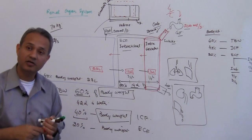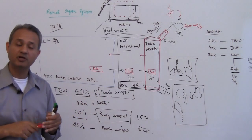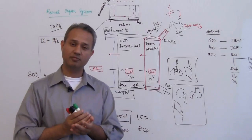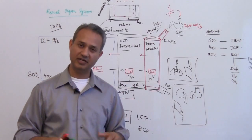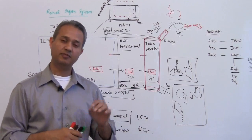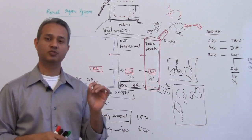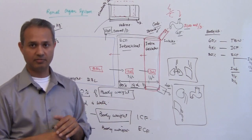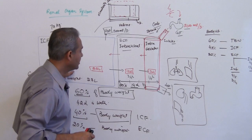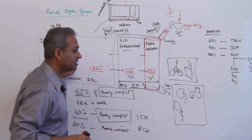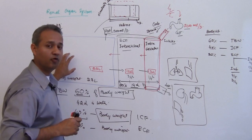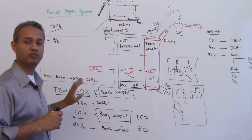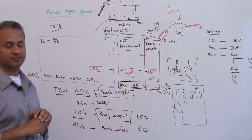The transcellular compartment is dealt with separately — about 2 liters is present in the transcellular compartments. So these are the volumes of the various body fluid compartments.